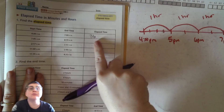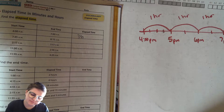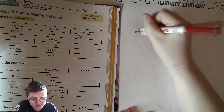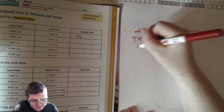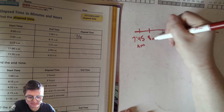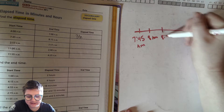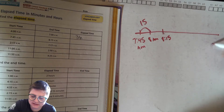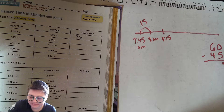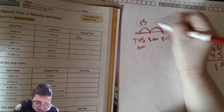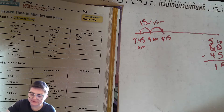Every once in a while — pretty often — you're going to have to find times that aren't on even hour marks. Here, for example, we have 7:45 AM. I'm going to put the next hour, which is 8 AM, as a marker, and then 8:15. How long is it from 7:45 to 8 AM? There are 60 minutes in an hour, so it's 15 minutes, because 60 minus 45 is 15 — or you can add 15 to 45 to get to 8 o'clock. Then from 8 o'clock to 8:15 is another 15 minutes. So 15 plus 15 is 30 minutes.